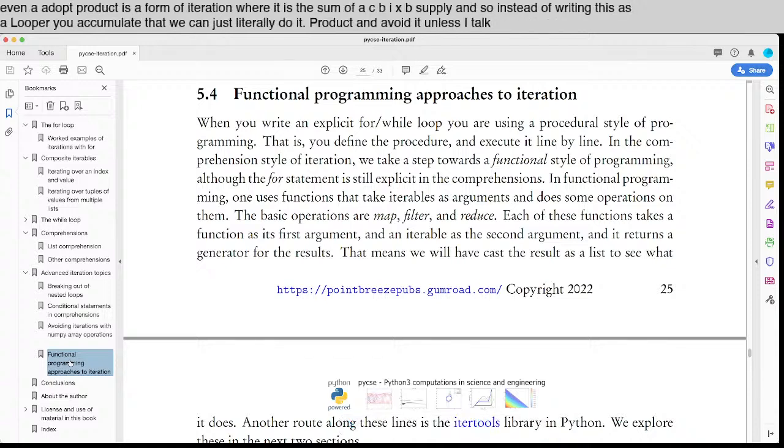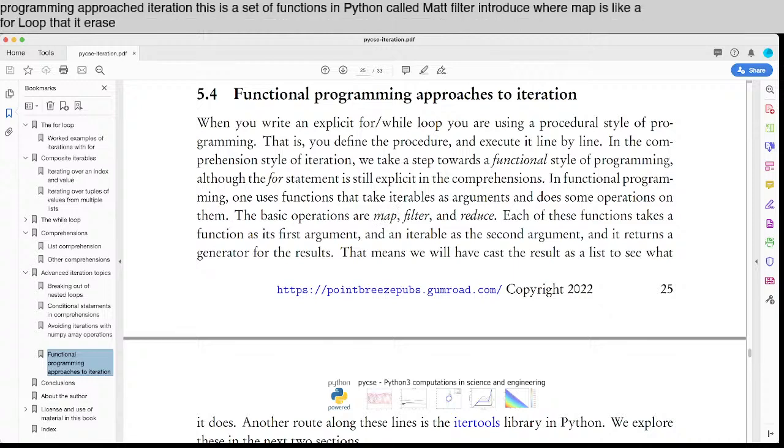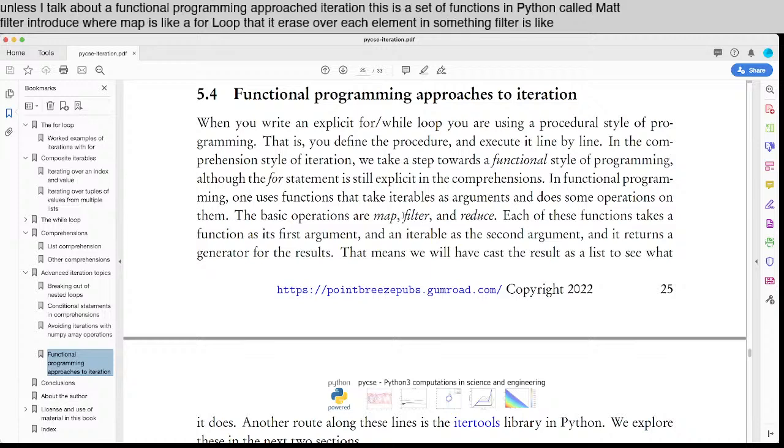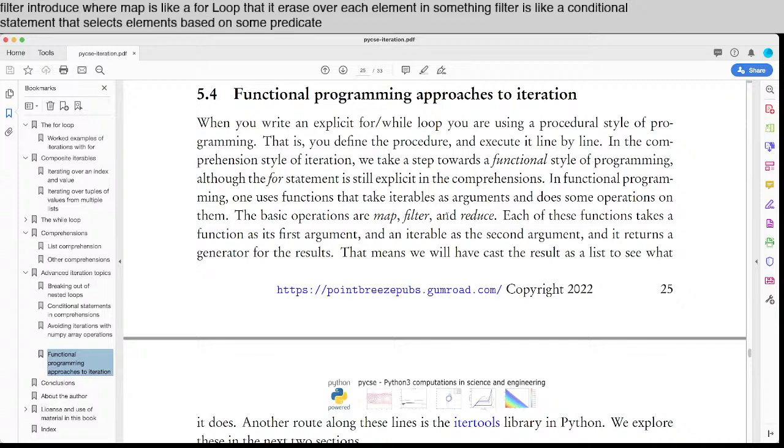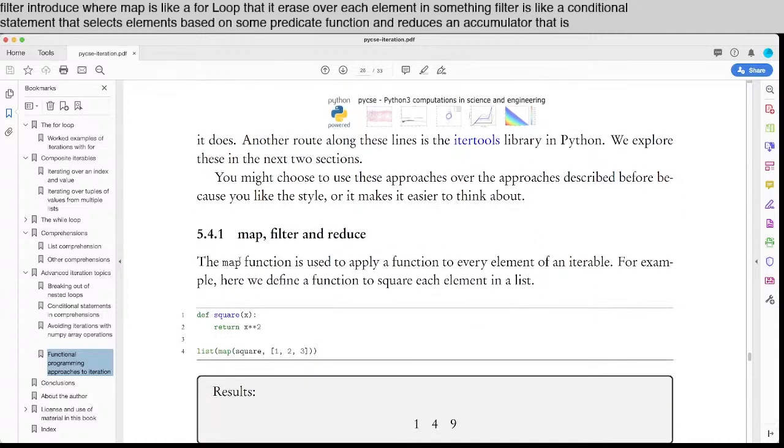And last, I talk about a functional programming approach to iteration. This is a set of functions in Python called map, filter, and reduce, where map is like a for loop that iterates over each element in something. Filter is like a conditional statement that selects elements based on some predicate function and reduce is an accumulator that is sometimes helpful.